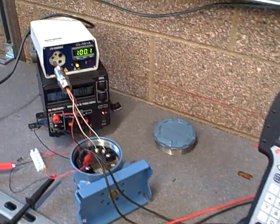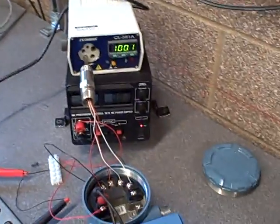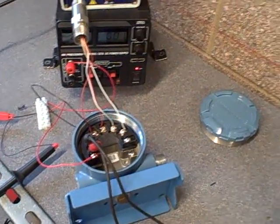What we're doing here is once again using a dry block calibrator to check the calibration of a Rosemount 3144 temperature transmitter.